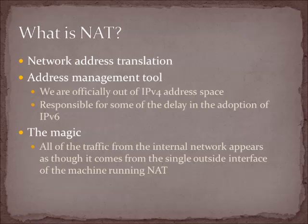The magic is that instead of needing a whole bunch of public addresses for your network, if you put a translator on the edge of your network and use private addresses inside, instead of needing an individual address for every single thing in your home — your printer, your Xbox, your computers, your laptops, even cell phones on your home network — they only need one outside public address. All the traffic appears to come from that single outside network address.